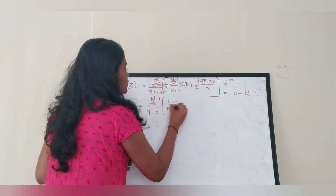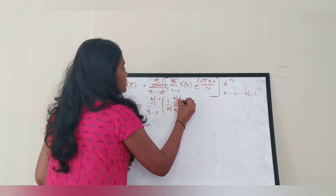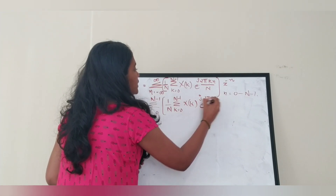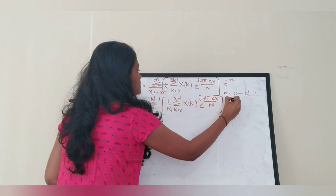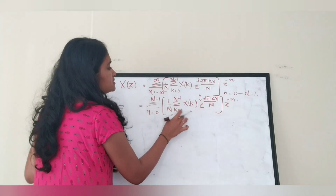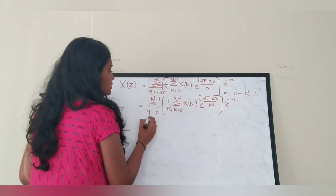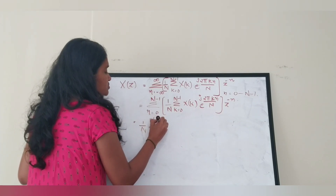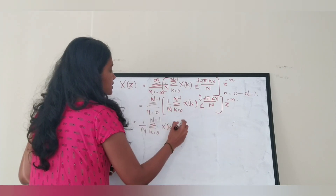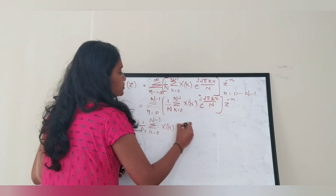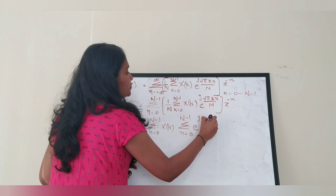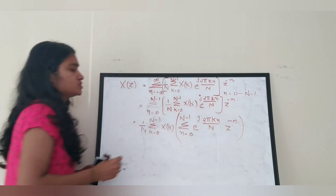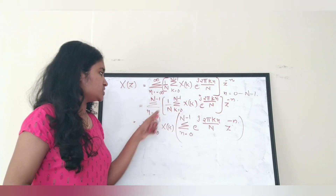So after substitution we have the IDFT equation inside: X(k) · e^(j2πkn/N) · z^(−n). I then take the outer terms — (1/N) · Σ from k = 0 to N−1 of X(k) — outside, and bring the summation over n inside, giving: Σ from n = 0 to N−1 of e^(j2πkn/N) · z^(−n).